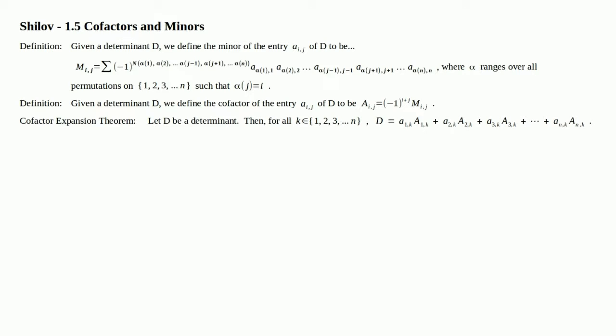Here's the cofactor expansion theorem. Let D be a determinant, then for any K in the set 1 through N — pick your K — the determinant is equal to this particular linear combination of the cofactors. You choose K, you choose a column, and this theorem obviously applies to rows too. Pick a column, and then you can calculate the determinant by simply calculating the cofactors, multiplying them by the corresponding entries in the matrix, and then adding them up. It is a linear combination of the cofactors.